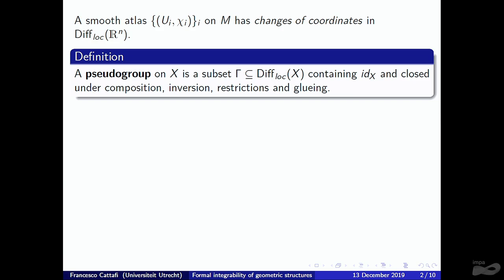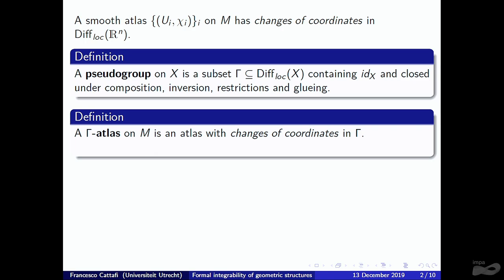More formally, one can define a pseudogroup on any manifold X. It contains the identity and is closed under composition and inversion, though composition is only defined when domains and codomains match suitably. There are also sheaf-like properties: the pseudogroup is closed under restriction of elements to open subsets of their domain, and under gluing — if elements of gamma glue to a bigger diffeomorphism, that element should also be in gamma. A gamma structure is then an equivalence class of gamma atlases, where the coordinate changes belong to gamma.